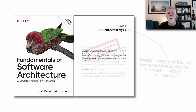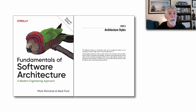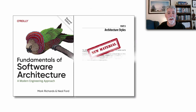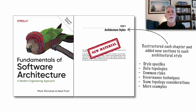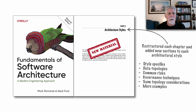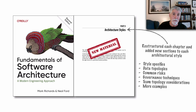Perhaps the biggest change in the second edition is with the architectural styles. We added a lot of new material to each of the architecture styles covered in this book — specifically more details about the specifics of each architectural style chapter, but also a focus on data and data topologies within each architecture, and common risks associated with each architectural style.